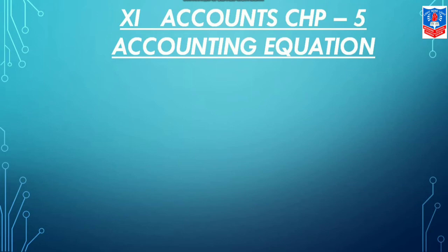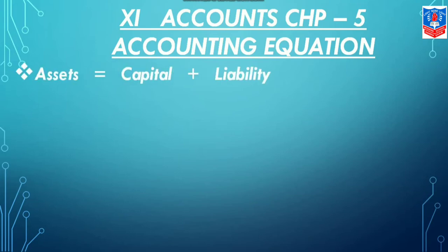As per the norms of double entry system, the total of both these components — capital, liability, and assets — should be identical, meaning they should remain the same, should be equal. How are these represented? Assets equals capital plus liability.